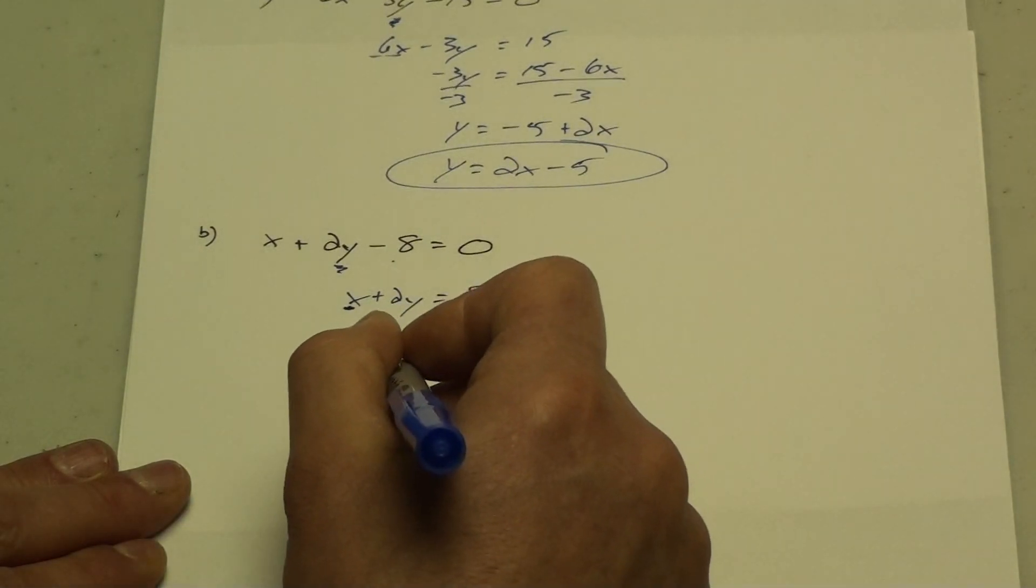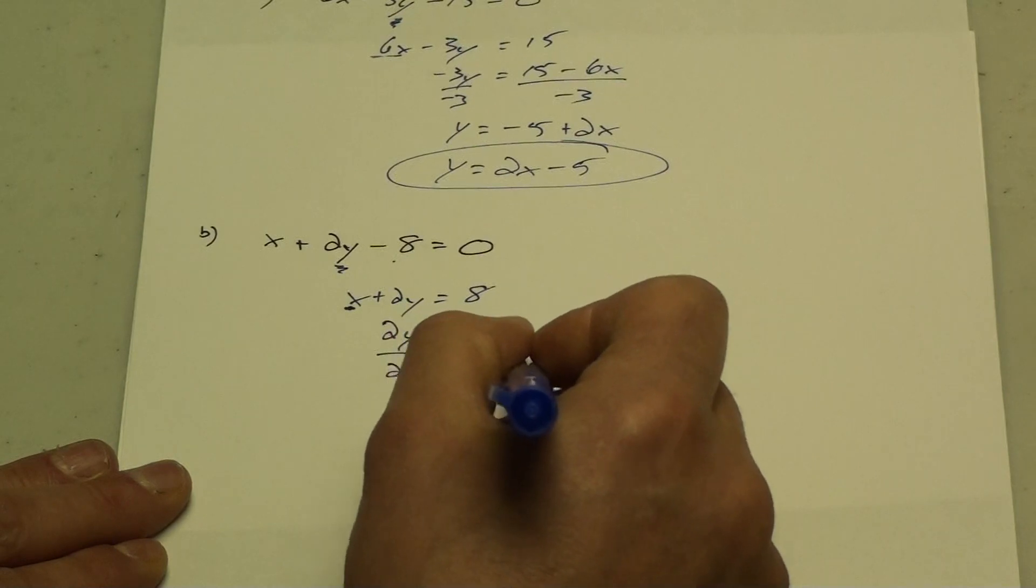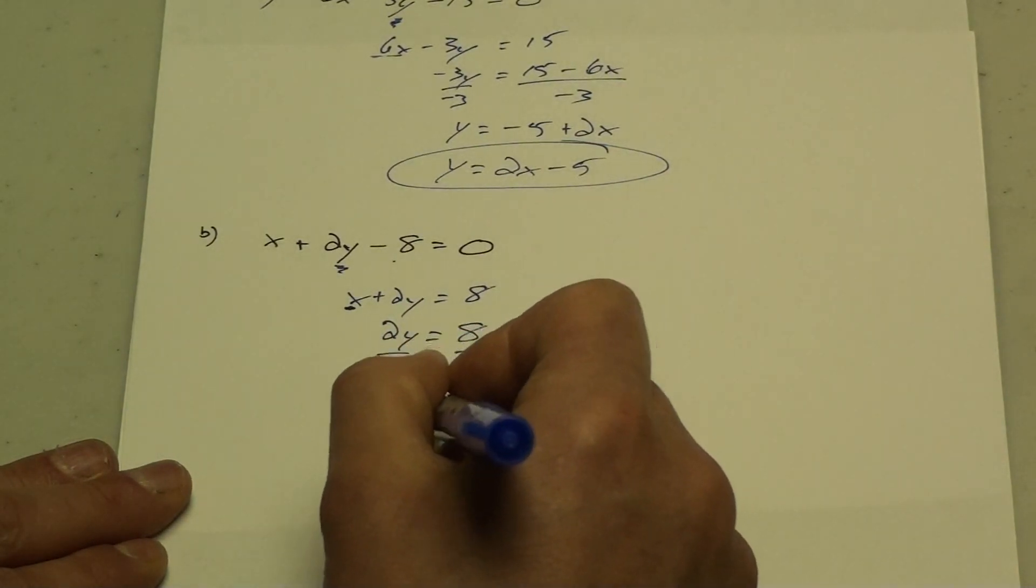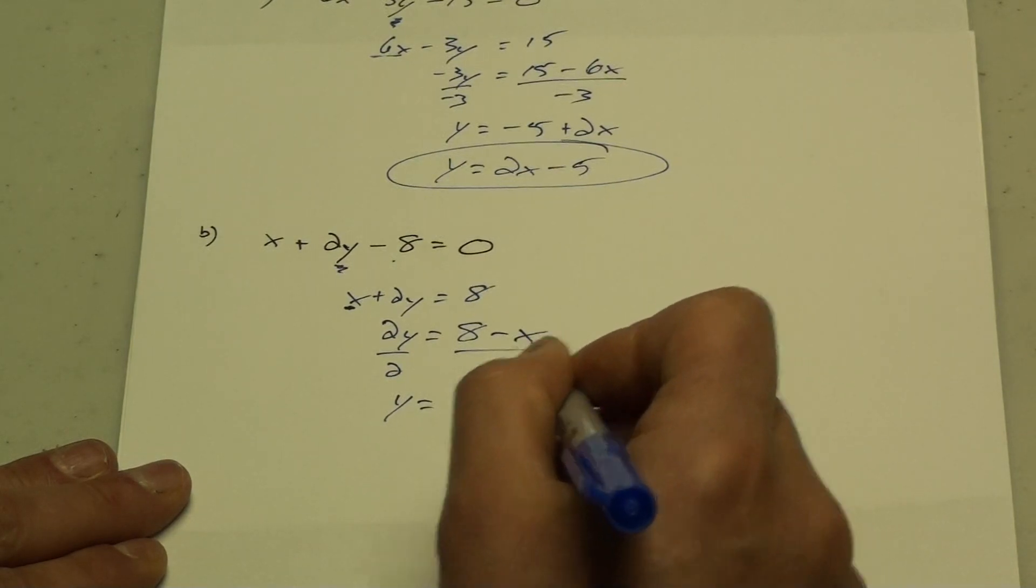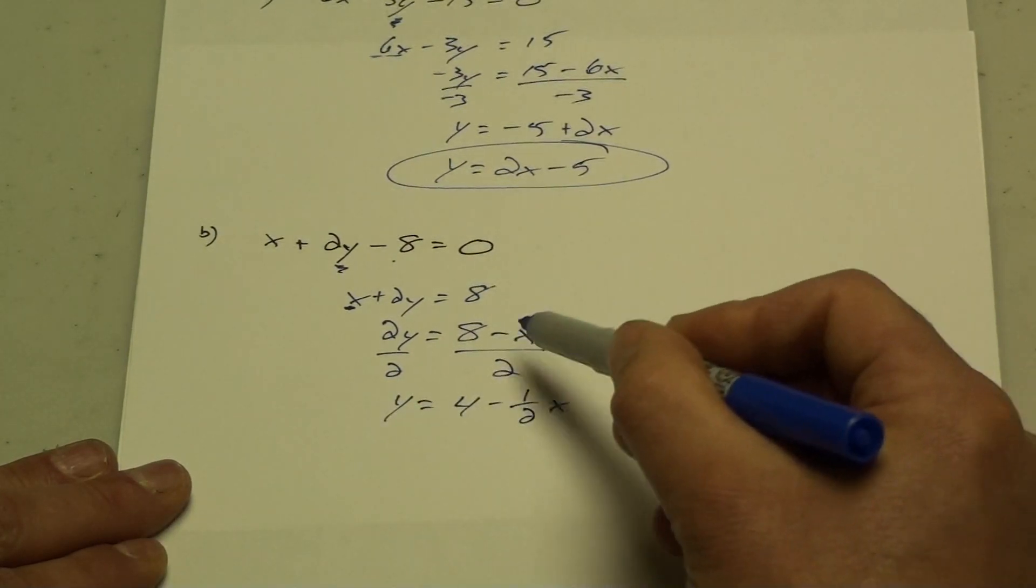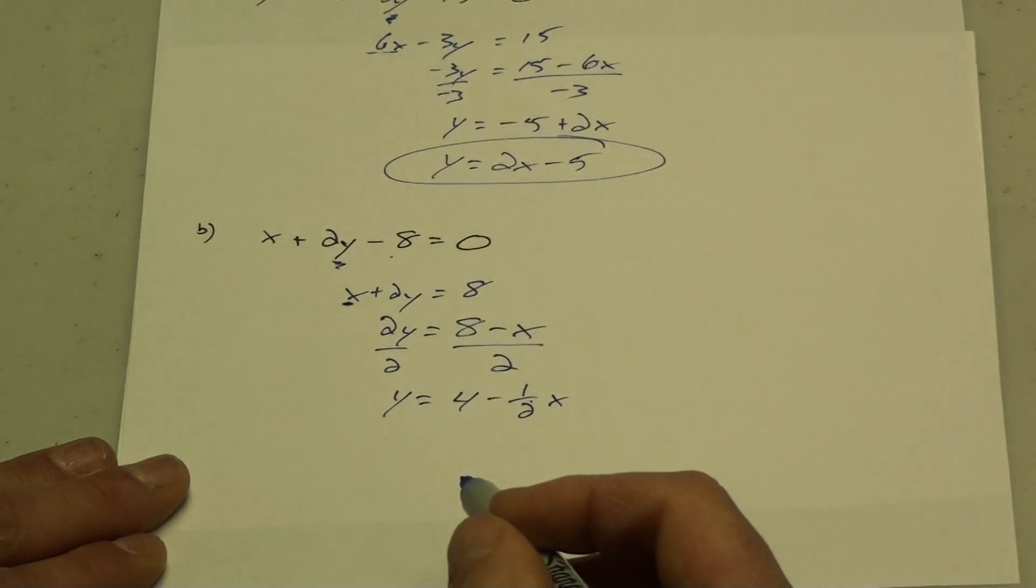Now I need to divide everything by 2 to get the y by itself. So I'm left with y equals 8 divided by 2 which is 4, and then minus one-half x. When I do x divided by 2, that is the same as one-half.